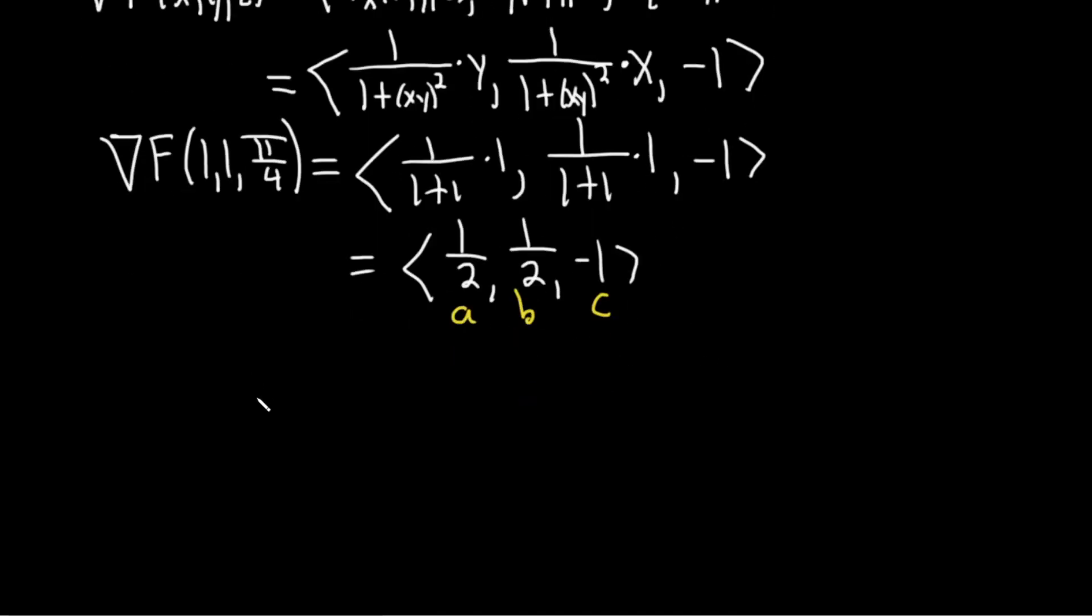I'm going to write down the equation of a plane for you one more time so you see it. It's a(x - x1) + b(y - y1) + c(z - z1) = 0, where a, b, c is our normal vector for our plane. And we know that in this case it's the gradient here. And our point: this is our x1, this is our y1, this is our z1.